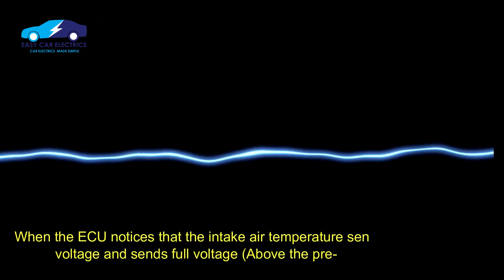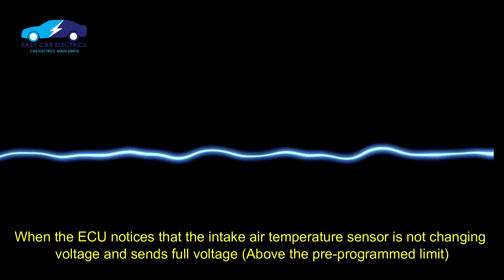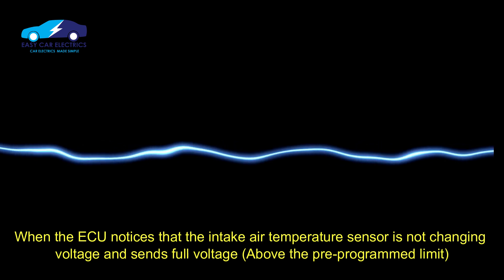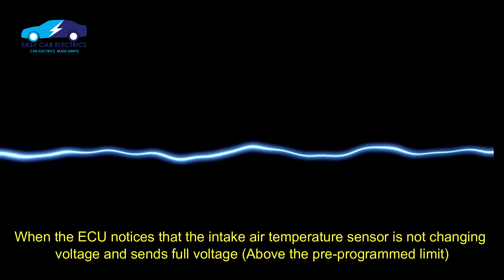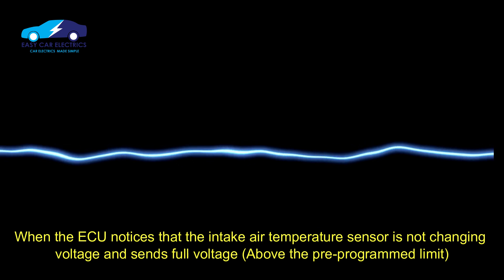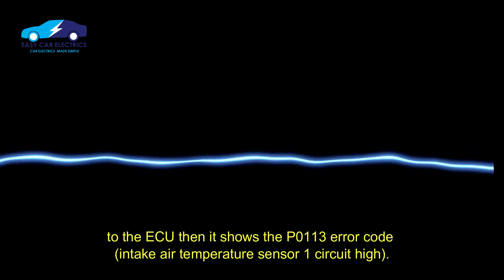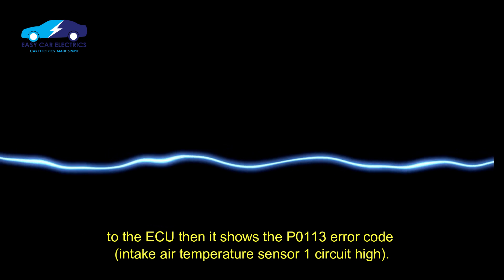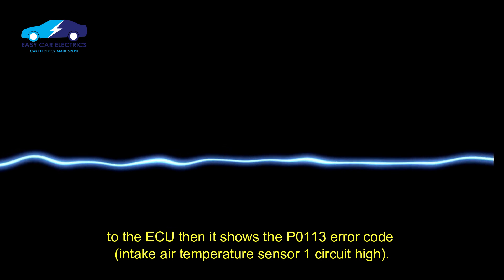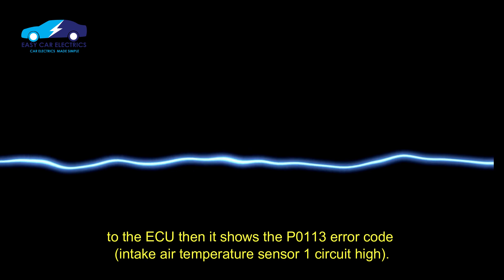When the ECU notices that the Intake Air Temperature Sensor is not changing voltage and sends full voltage above the pre-programmed limit to the ECU, then it shows the P0113 error code: Intake Air Temperature Sensor 1 Circuit High.